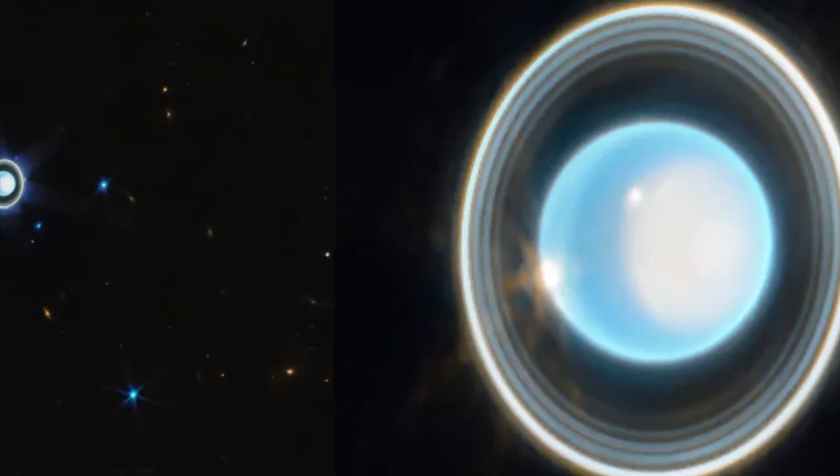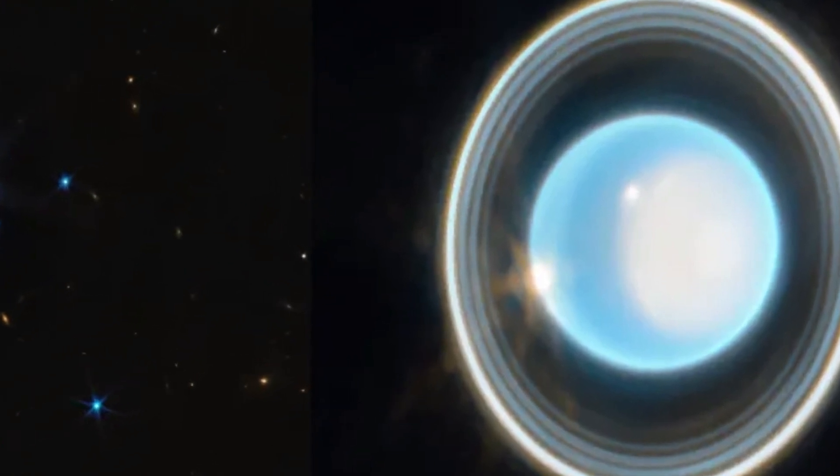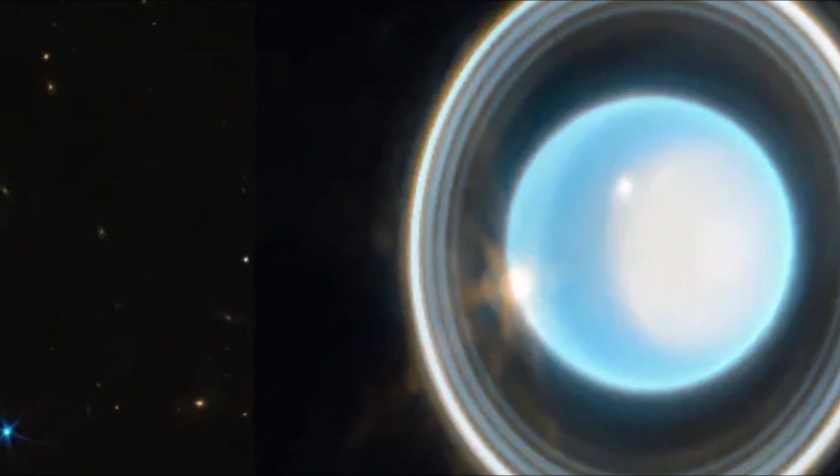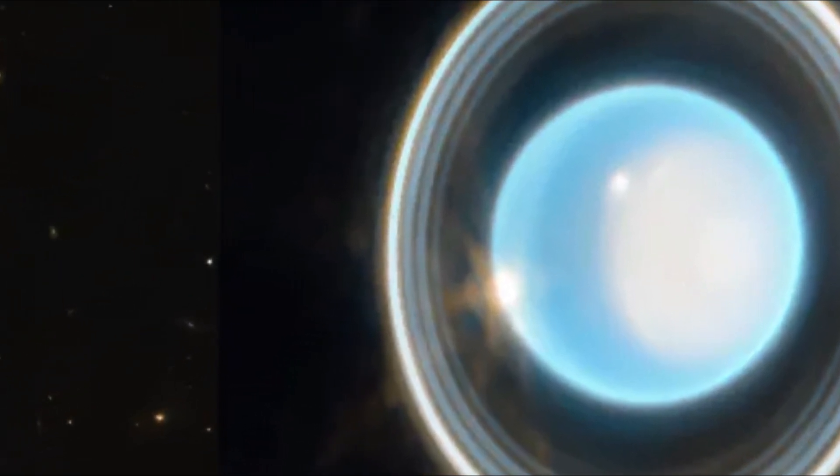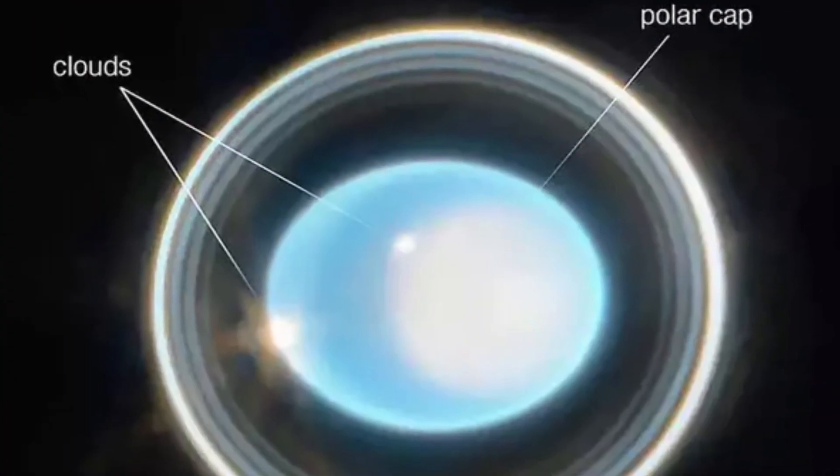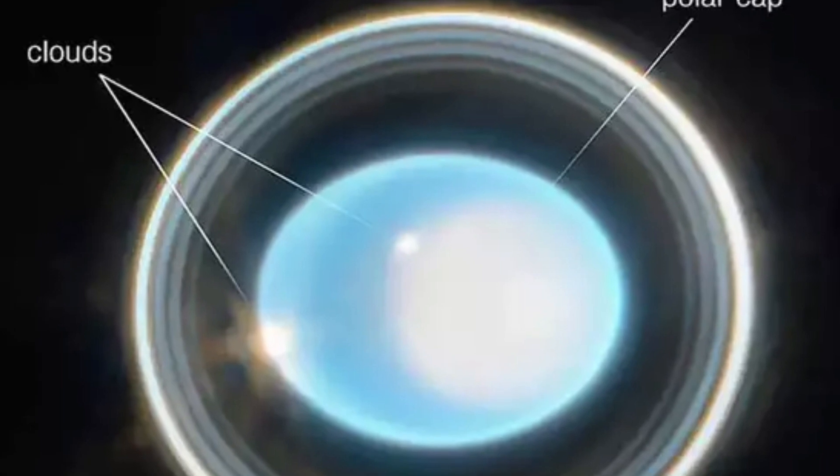As Uranus tilts at an extreme 98-degree angle, experiencing the most extreme seasons in the solar system, Webb's unparalleled infrared resolution and sensitivity become crucial. It is at the solstice that the weather in the planet's polar cap becomes most active.